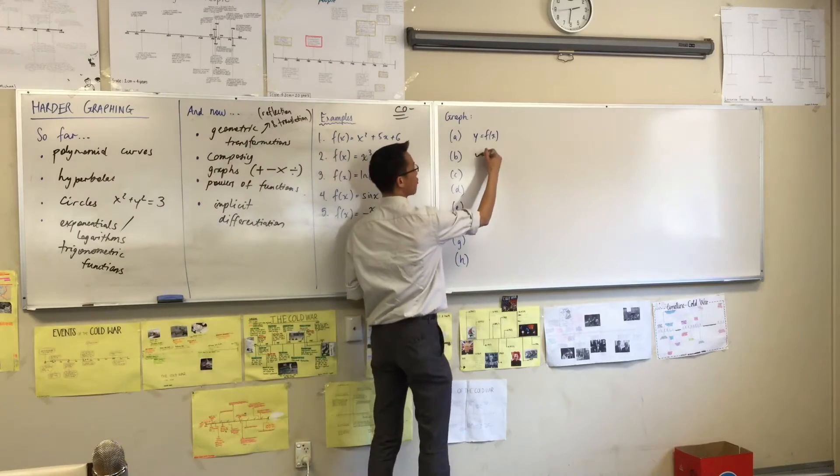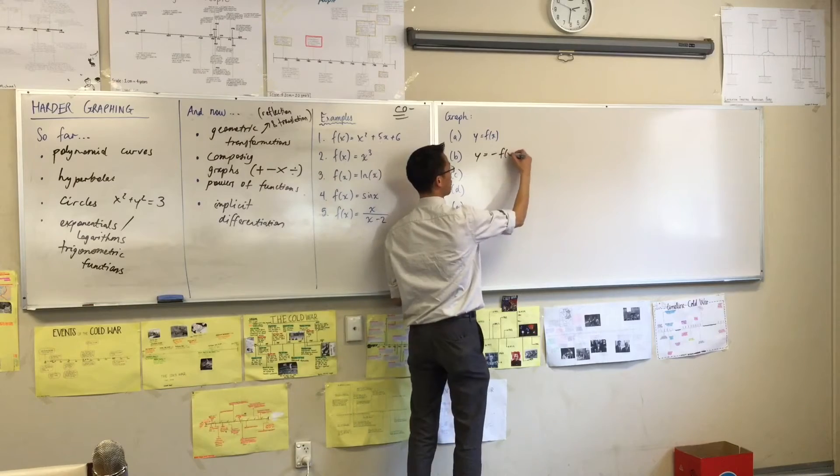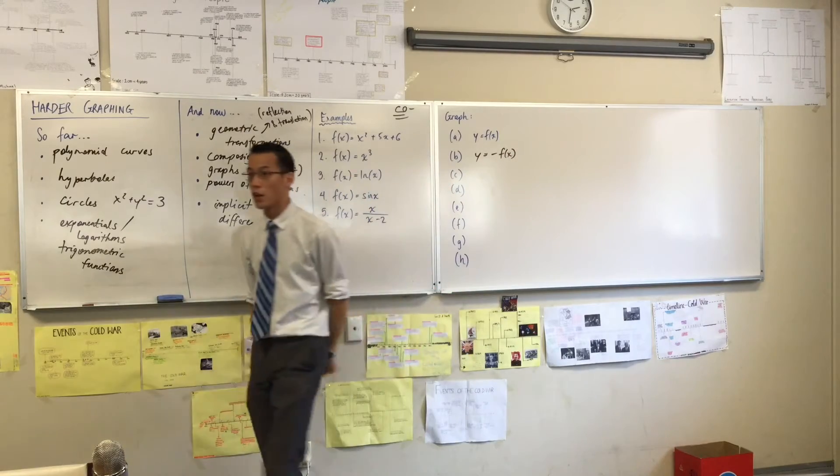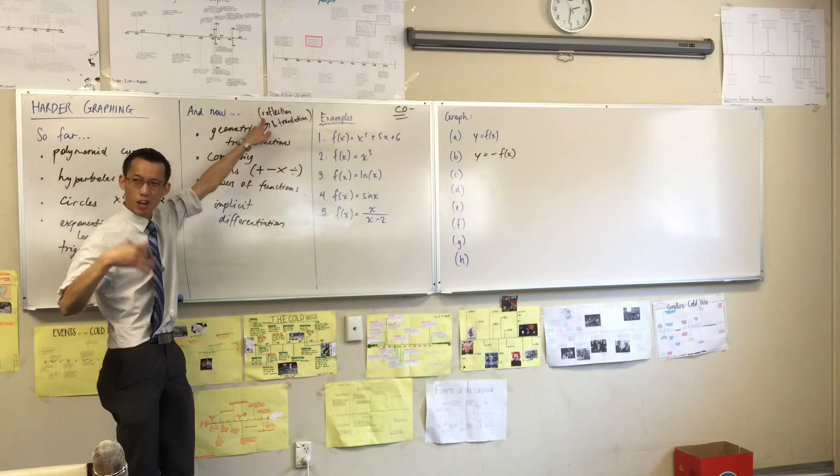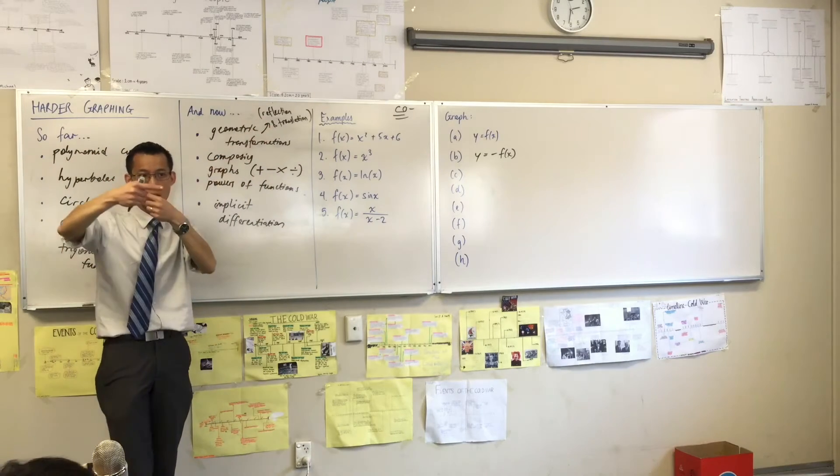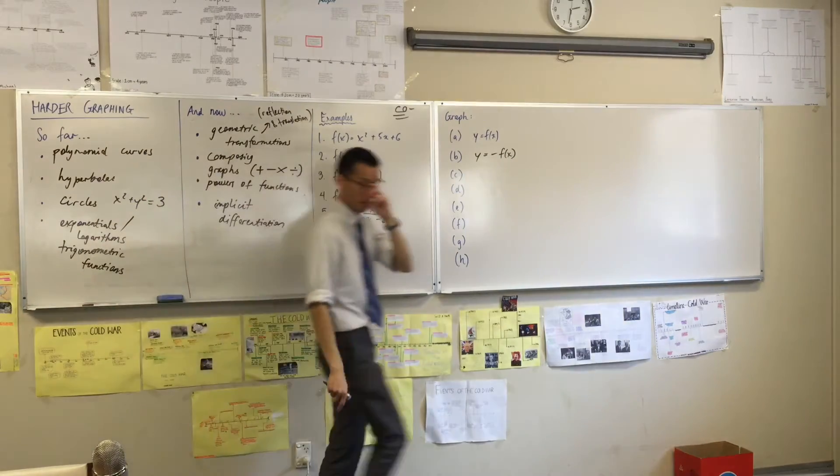So we could write, instead of y equals f(x), if you slap a minus sign all the way out the front like this, that's going to turn the whole thing upside down, right? Or a more technical way to say it: you're going to reflect it across the x-axis. Are you happy with that?